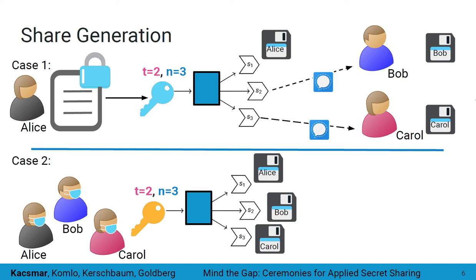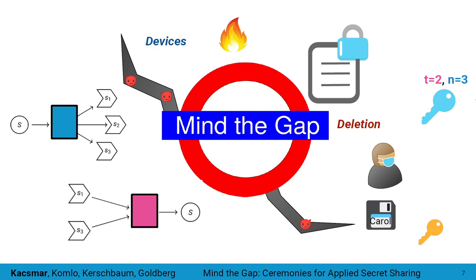From a theory perspective, we have clearly defined mathematical algorithms for taking a secret S and producing shares such that recovering that secret requires a certain size subset. However, in practice, we have storage requirements, communication channels, choosing appropriate thresholds — all of which Alice faced in the previous examples. Alice had to decide whether to meet in person, send shares digitally, how to store the shares, what to compute the shares on, and what thresholds made sense. There are human actions and decisions that must be accounted for in analyzing the security of these threshold schemes, and we look at secret sharing through the lens of ceremony analysis.